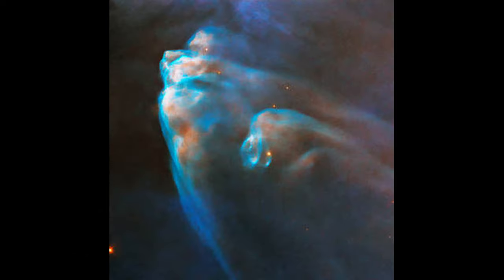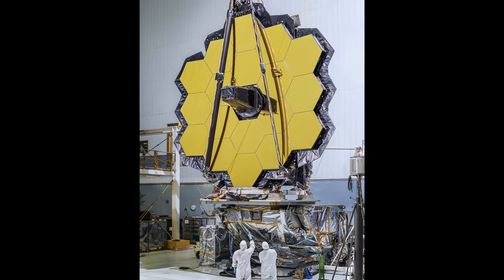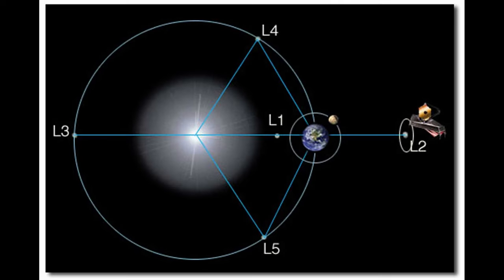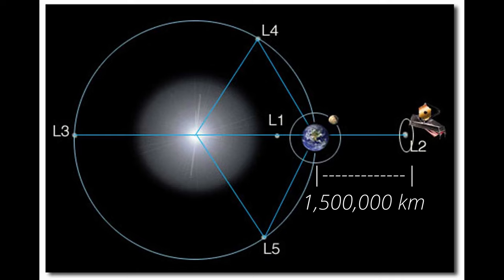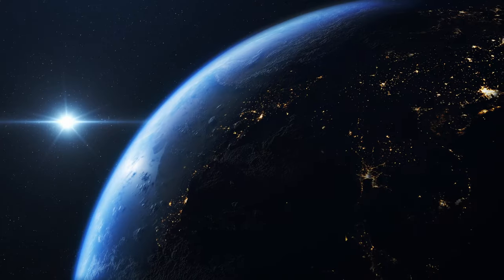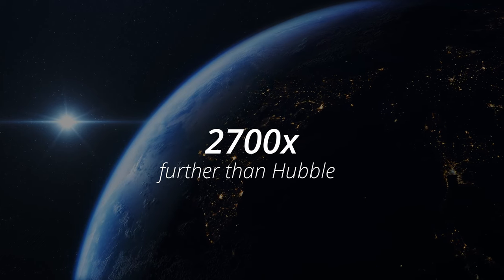Just imagine how many more pictures we'll be able to see. What is even more incredible is that the Webb Telescope will be able to transmit data at those higher downlink speeds from a distance of 1.5 million kilometers, which is significantly further than the Hubble Telescope that sits in a low Earth orbit at a distance of only 550 kilometers. After doing the math, the Webb Telescope will be communicating with the Earth from a distance that is 2,700 times further than the Hubble Telescope.